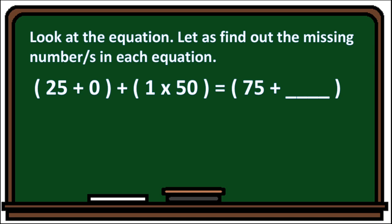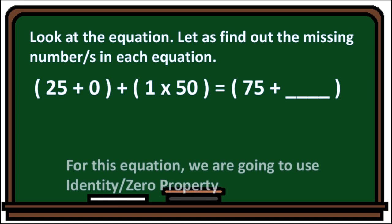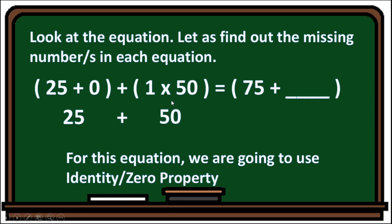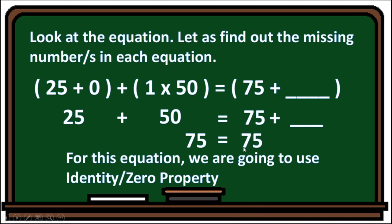Another example: 25 plus 0 plus 1 times 50 equals 75 plus blank. For this equation, we use the identity or zero property. Since 25 plus 0 equals 25, and 1 times 50 equals 50, then 25 plus 50 equals 75. So the missing number is 0.